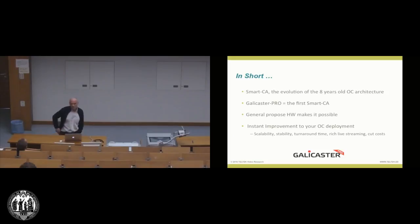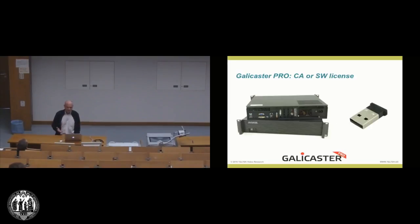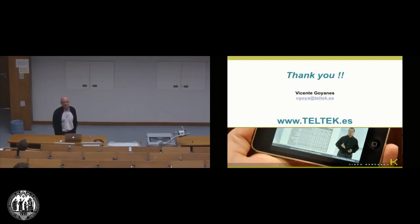Well, Galicaster Pro is the first implementation. It's a real implementation of this new paradigm of the smart capture agent. And just adding one, you can improve your OpenCast deployment, so it's very easy to test it. This Galicaster Pro thing, it's available as a capture agent, ready to use, a commercial capture agent, but also it's available as a software license for under 400 euros. So, again, very easy to test the idea. And that's it. Thank you.